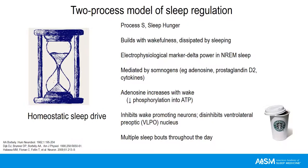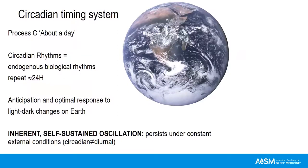If we only had the homeostatic sleep drive, we would sleep in multiple bouts dispersed through a 24-hour day, about two to three hours in duration. Once we built up that homeostatic sleep drive again, we'd go back to sleep, dissipate it, then be up again. As you can imagine, that's not a very adaptive way of living, and that's why we have the circadian timing system.